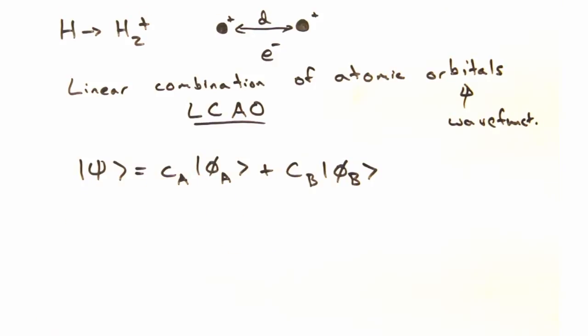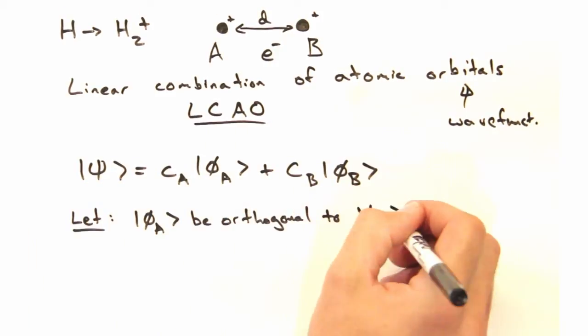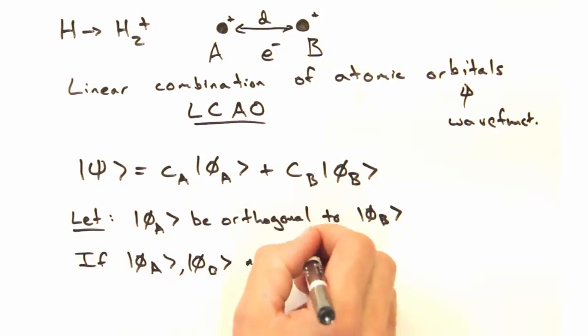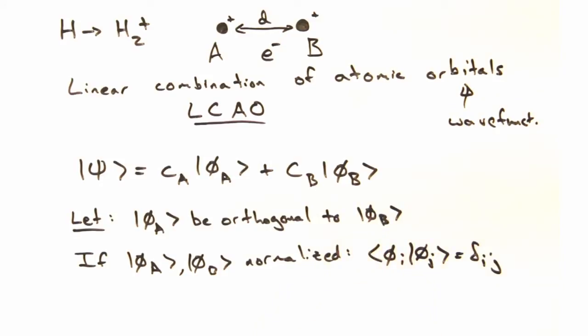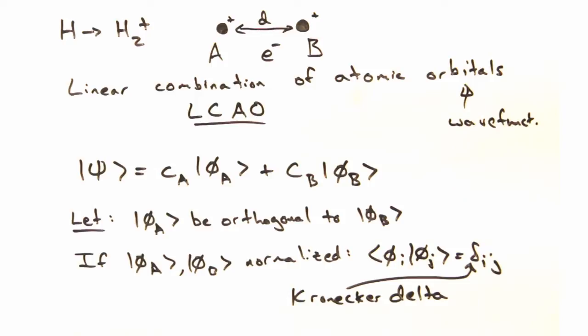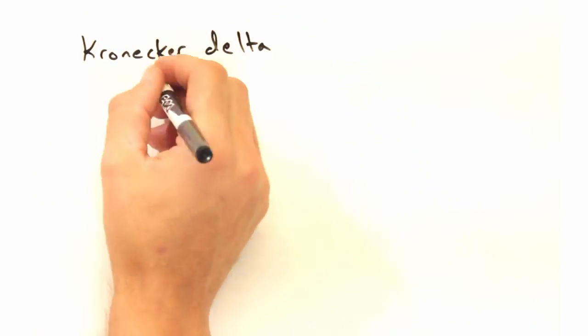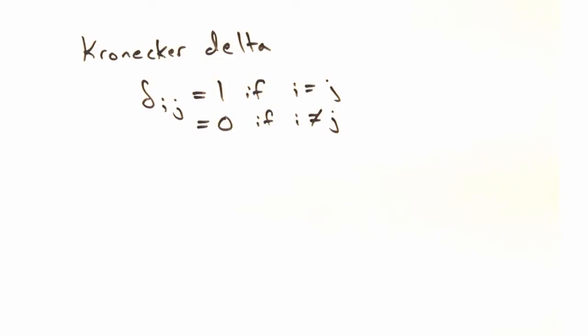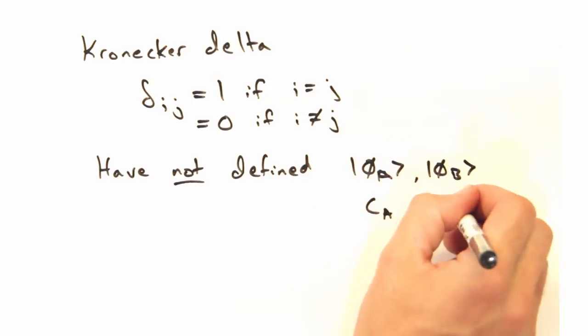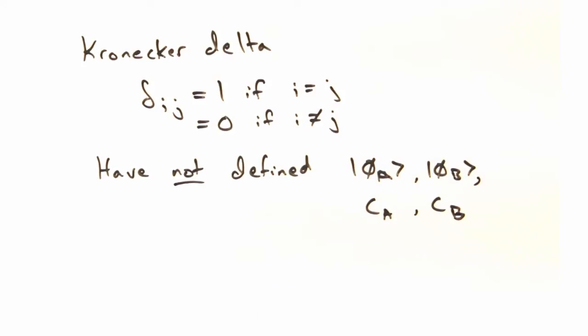True. Let's make one assertion about the isolated wave functions. Let's make them orthogonal to each other. Okay. Then if the original wave functions were normalized, we can write the following. So at this point, we haven't explicitly defined the isolated wave functions, nor the coefficients CA or CB.